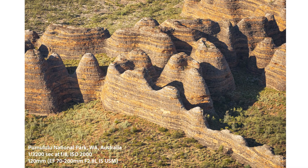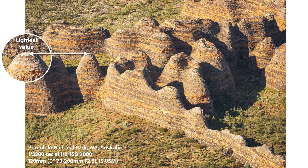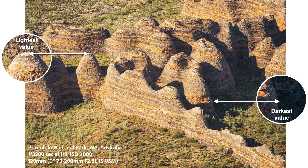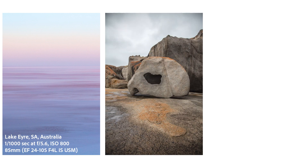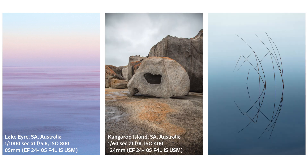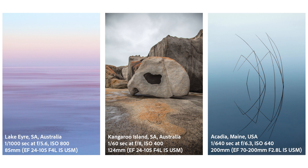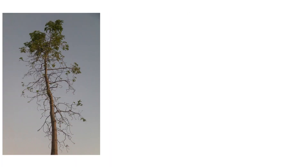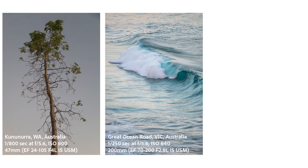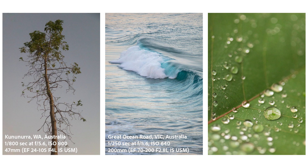Unfortunately, it can be difficult for cameras to capture the entire dynamic range of a scene in a single exposure. This is one of the reasons that photographers like to take photos close to sunrise and sunset, on overcast days, in shade, or even in a studio where the difference between the brightest and darkest values in the scene is much smaller.